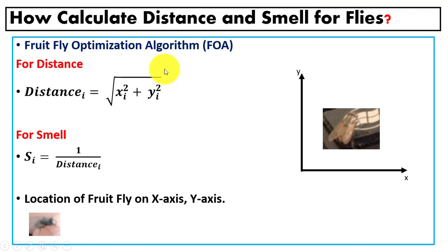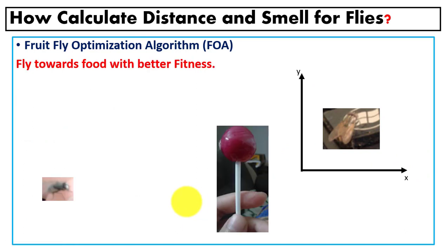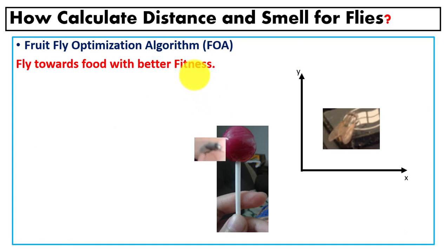To compute the distance and the smell for the flies, we use specific equations — one equation for distance and another for smell. For the location of the fruit flies, we use the x and y axes to show the position of each fruit fly. After that, we compute the fitness value for each fruit fly. The fitness value is computed using the smell function, also called the objective function or fitness function, to find the best smell, which is the best fitness.